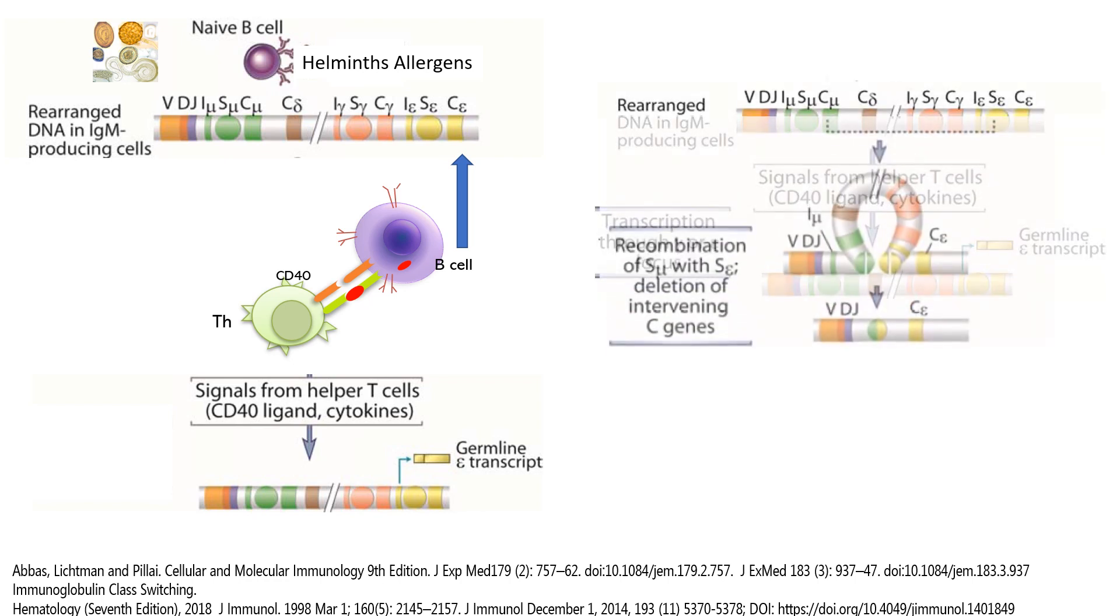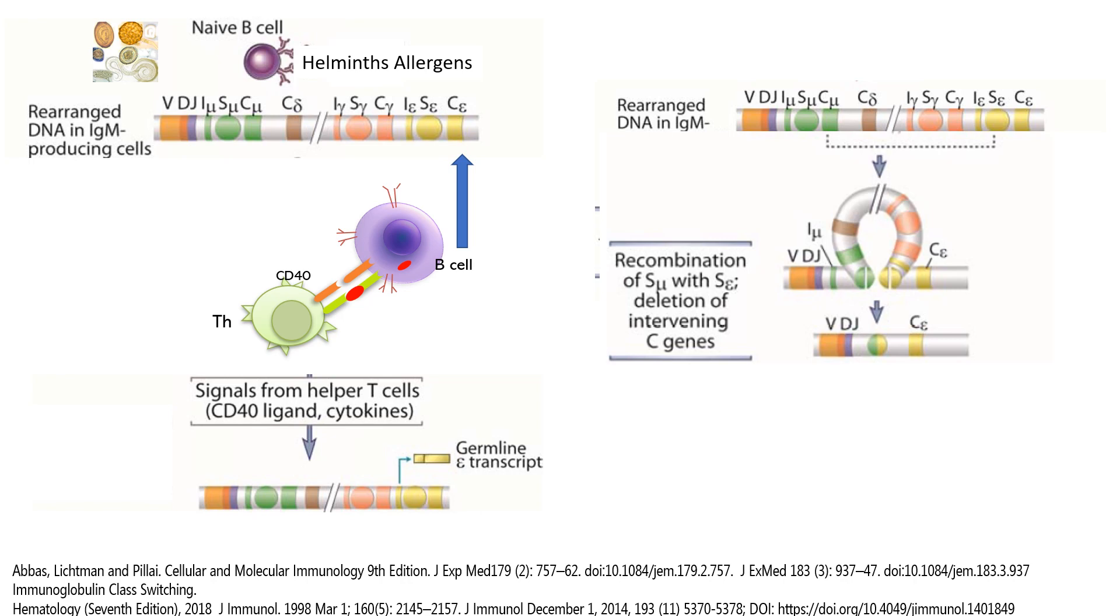What happens is that this signaling will make the two switching regions between the mu and the epsilon to come together and the rest of that section will be clipped out. So that particular piece of the gene that contains all the other genes for all the other isotypes or classes is clipped out.